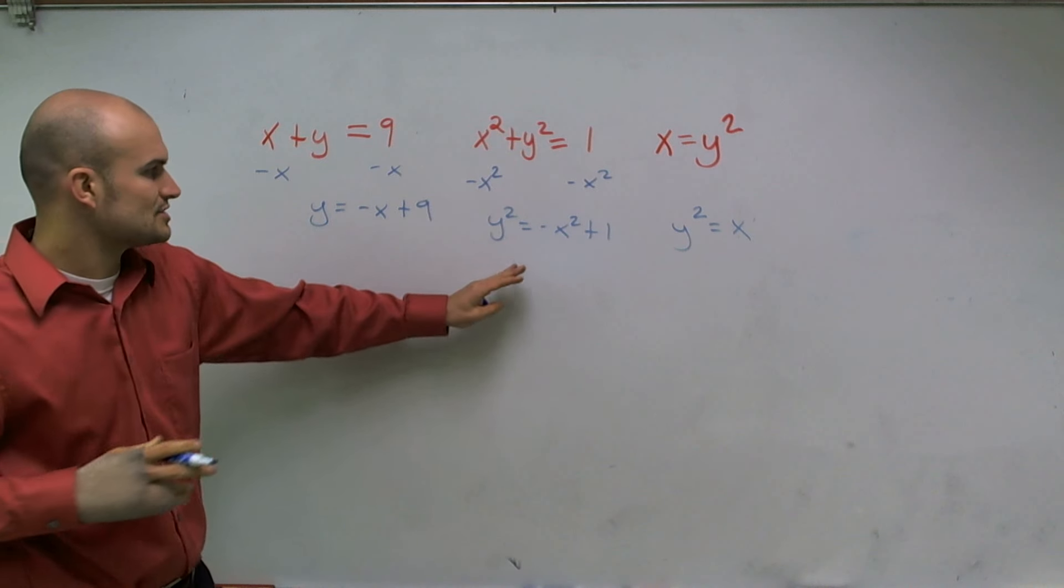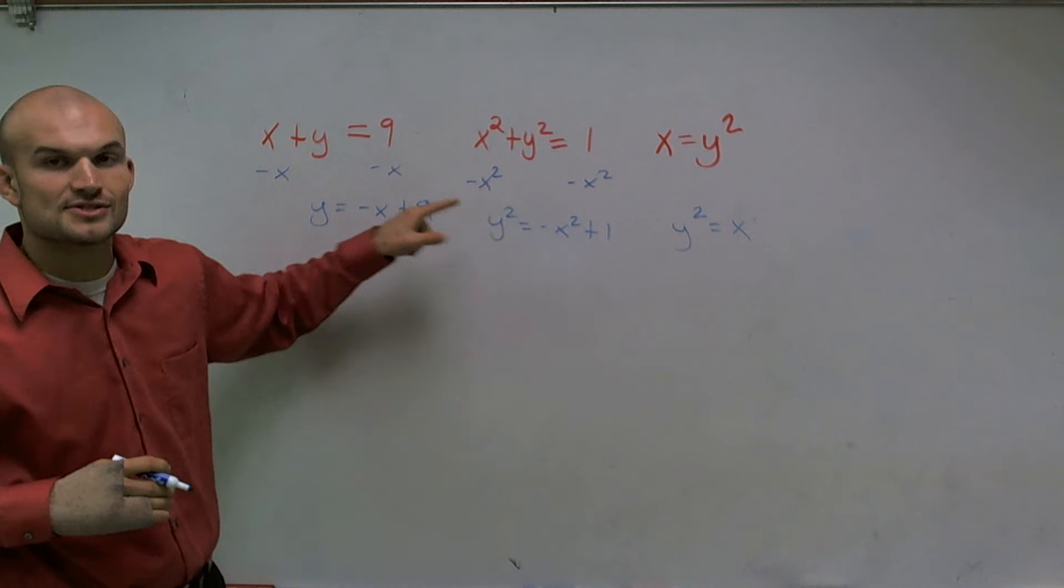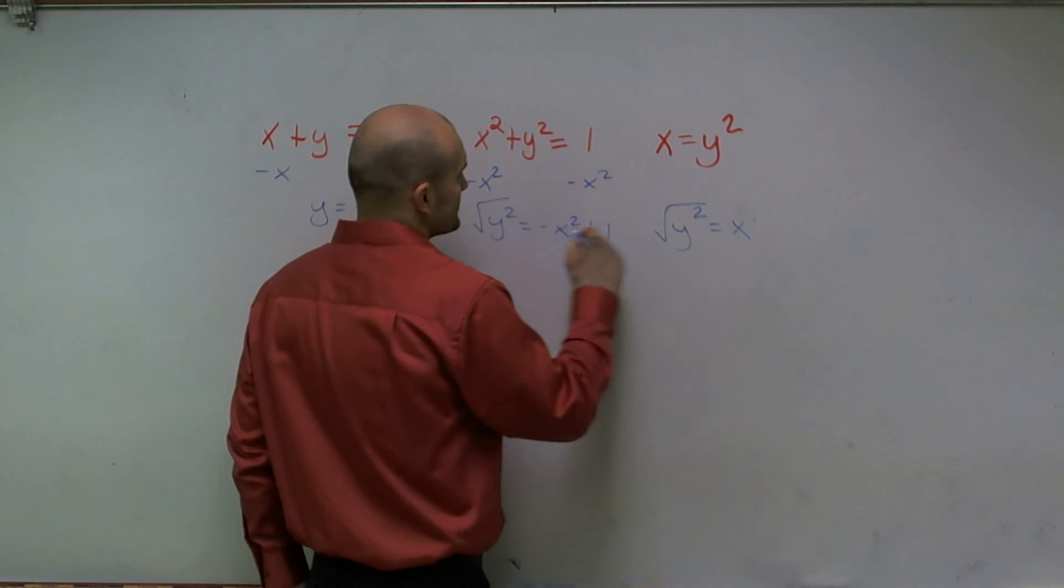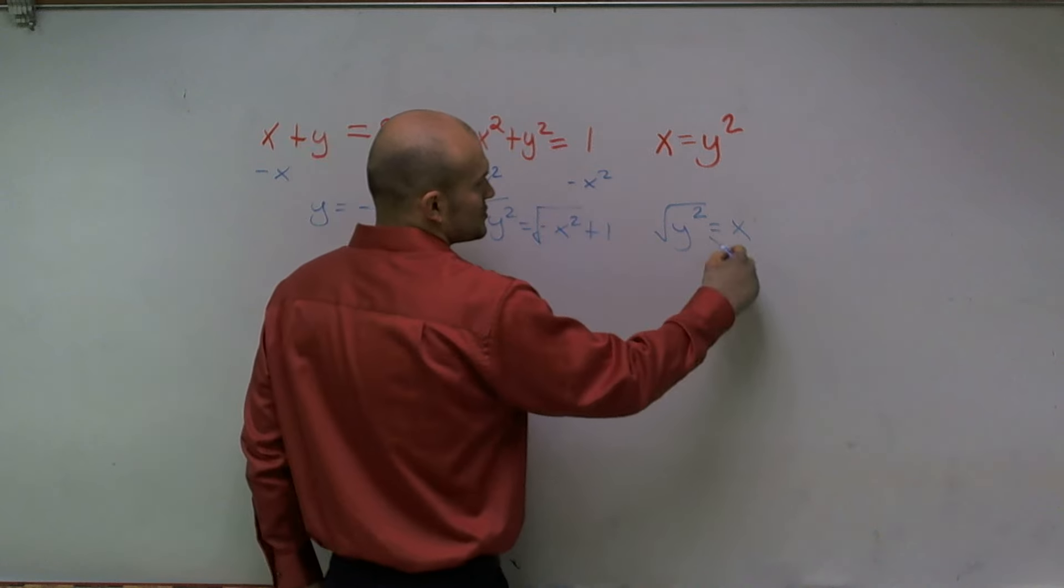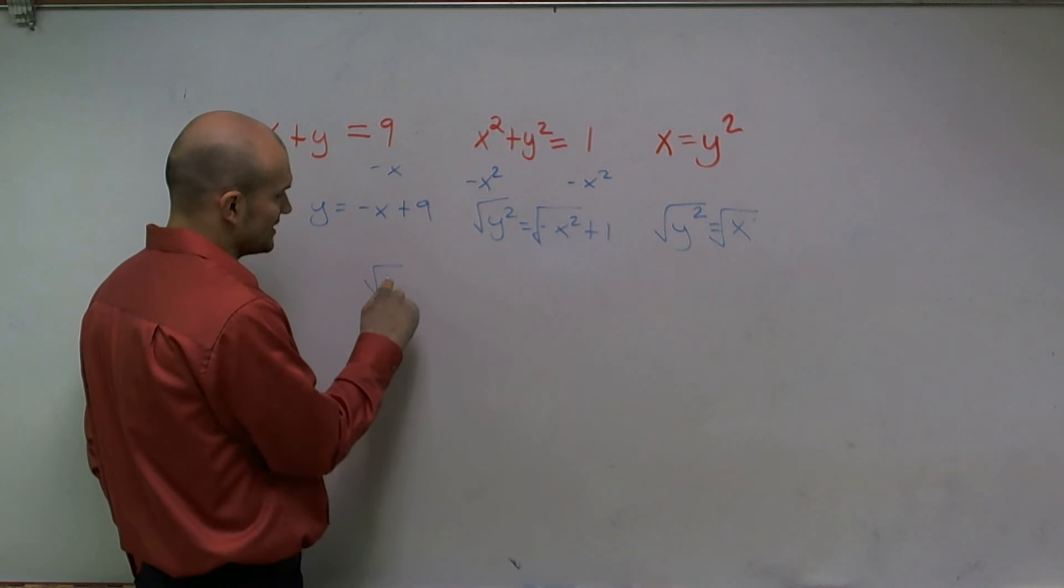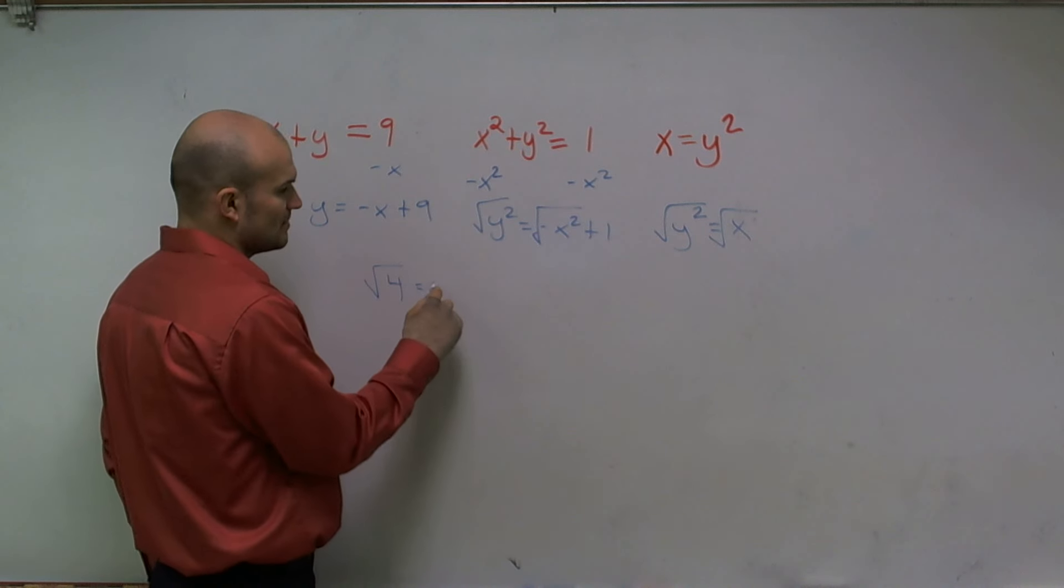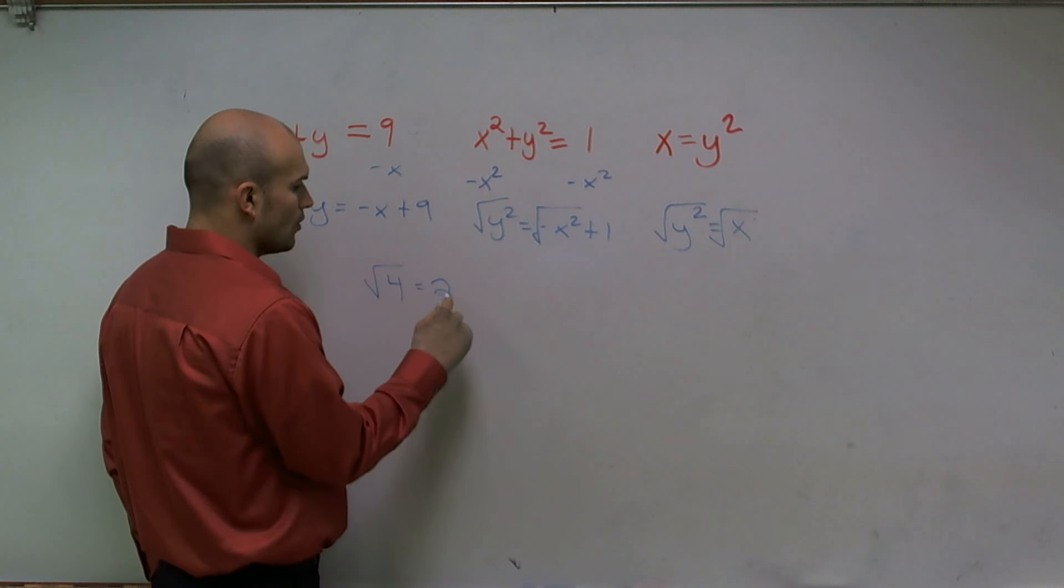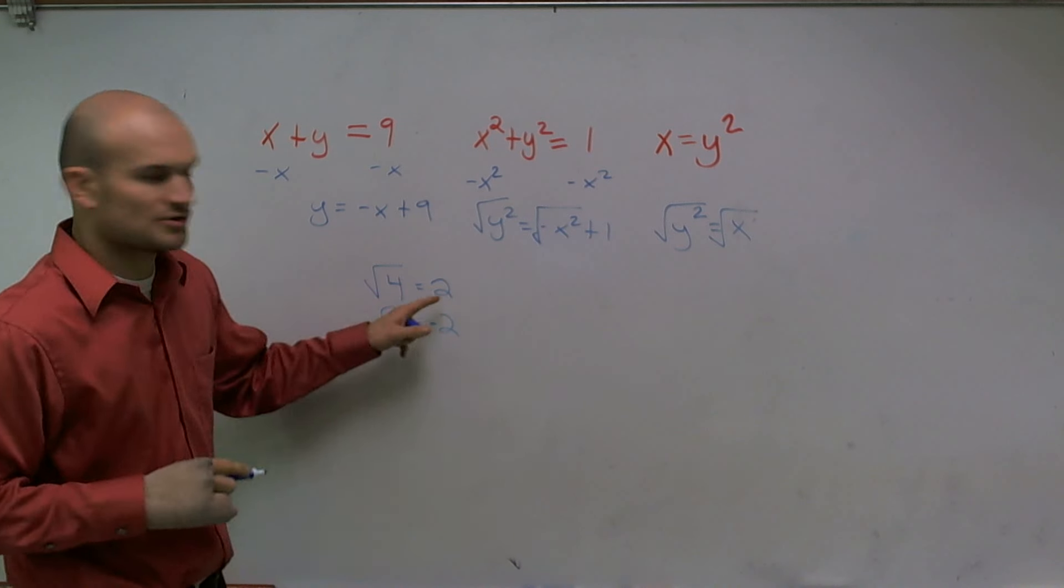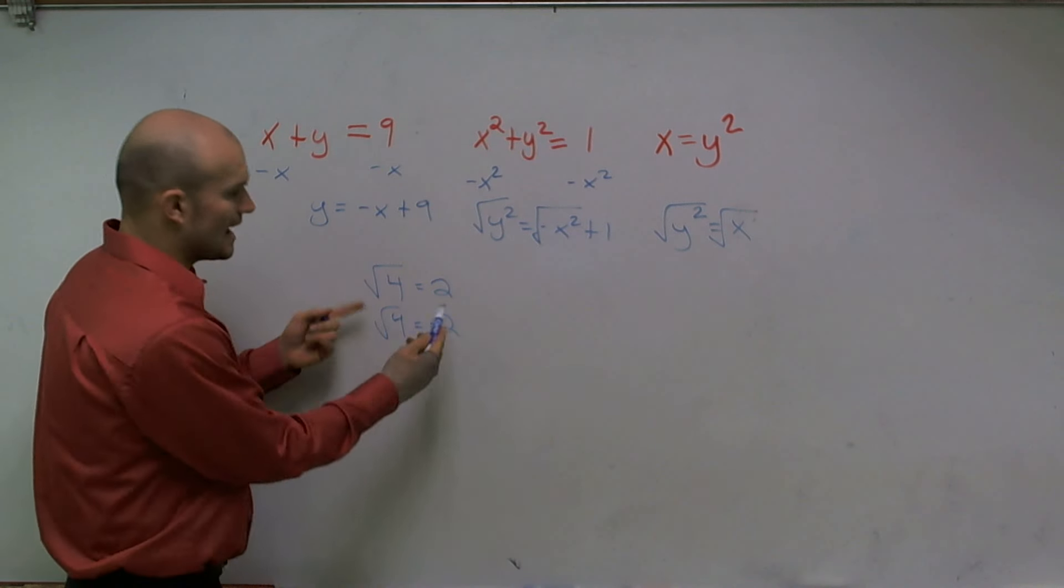Now these two equations are different because to solve for Y, I have to take the square root on both sides. And whenever you take the square root on both sides, remember the square root of a number—if I was going to take the square root of four, that could be two or negative two.